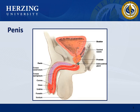The male genital structures include the penis and scrotum externally, and the testes and vas deferens internally. Other major structures of the penis include the glans, corona, urethra, foreskin, and frenulum.